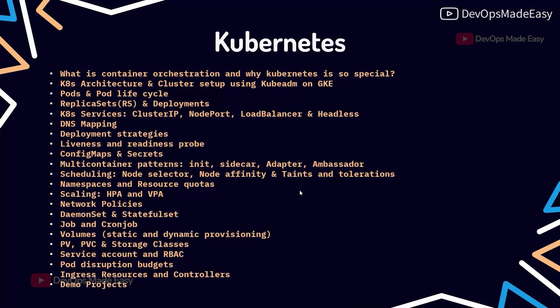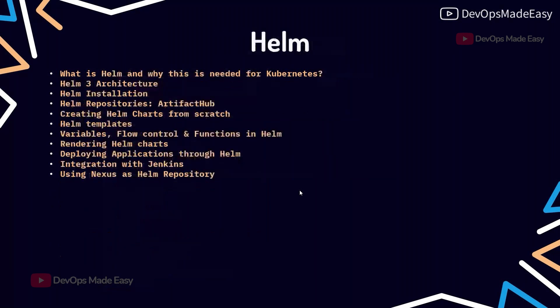Kubernetes is a topic we spend most of the time on. We'll cover the need for orchestration, why Kubernetes is special, its architecture, setting up clusters on AWS and local machines, pods, replica sets, services, DNS, deployment strategies, probes, ConfigMaps and secrets, multi-container patterns, scheduling, namespaces, resource quotas, networking policies, DaemonSets, Jobs, CronJobs, Kubernetes volumes, PVs, PVCs, service accounts, RBAC, Pod Disruption Budgets, and ingresses.